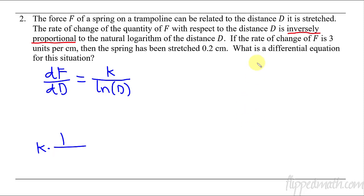All right, there's the whole thing, right? So now we are given some more information. We're given the rate of change of F is three units per centimeter. So this thing here is going to be three. So let's say three equals, and then we don't know what k is, so I'll just put a k there still, but we know that the distance has been stretched 0.2 centimeters. So now let's say the natural log of 0.2. What this does is when we're given certain information, it allows us to solve for k. So if I multiply both sides by this natural log of 0.2, and I have my calculator in the background here that I already did this on, so I know what that answer is, negative 4.828 is approximately the value of k.